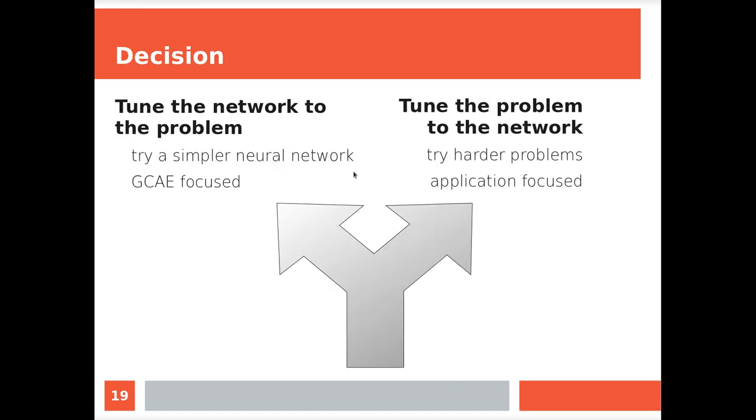So that's a hypothesis, we can test that, but we won't. Because we could tune the network to the problem by trying a simpler one and figuring out how GCAE works then. That will be insightful in a way, but instead we decide to tune the problem to the network by trying harder problems, and this focuses more on the application of the thing, which makes sense.